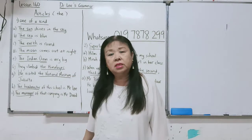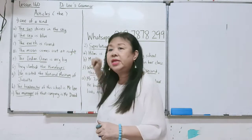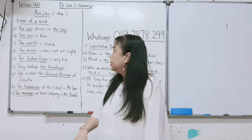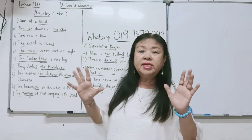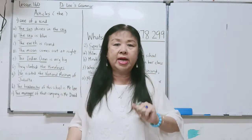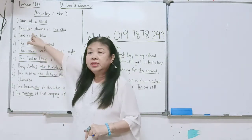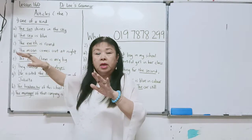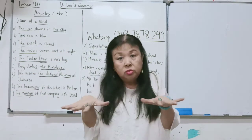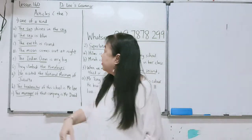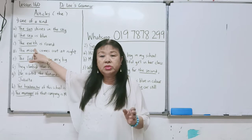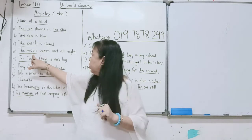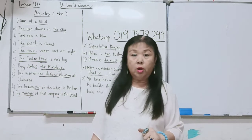Kita gunakan The. Saya beri tiga situasi di mana kita gunakan The. Situasi yang pertama: apabila hanya satu jenis di dunia ini — one of a kind. Contoh: The sun, matahari, hanya satu. The sky, hanya satu. The sea, ada banyak laut tetapi dia satu jenis sahaja, jadi The sea. The earth, bumi, hanya satu. The moon, bulan, hanya satu. Untuk lautan — ocean — walaupun huruf besar, kita gunakan The.